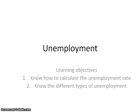This screencast is on the Leading Economic Indicator: Unemployment. We are going to look at how to calculate the unemployment rate and then also the three different types of unemployment: frictional unemployment, structural unemployment, and cyclical unemployment.